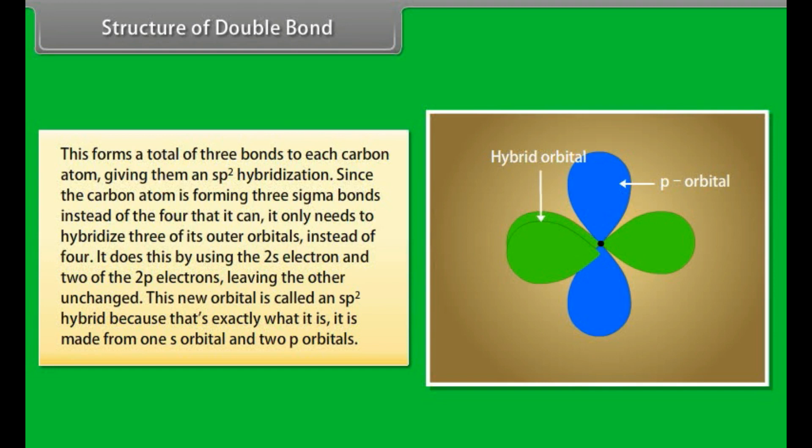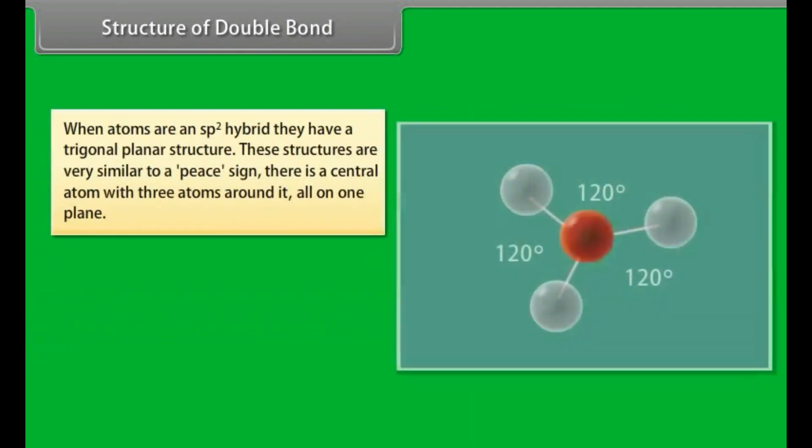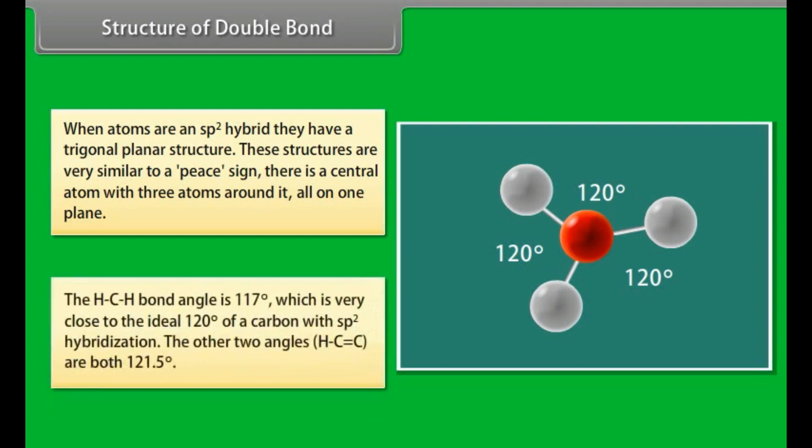When atoms are in sp2 hybrid, they have a trigonal planar structure. These structures are very similar to a pi sign. There is a central atom with three atoms around it, all on one plane. Trigonal planar molecules have an ideal bond angle of 120 degrees on each side. The HCH bond angle is 117 degrees, which is very close to the ideal 120 degrees of carbon with sp2 hybridization. The other two angles HCC are both 121.5 degrees.